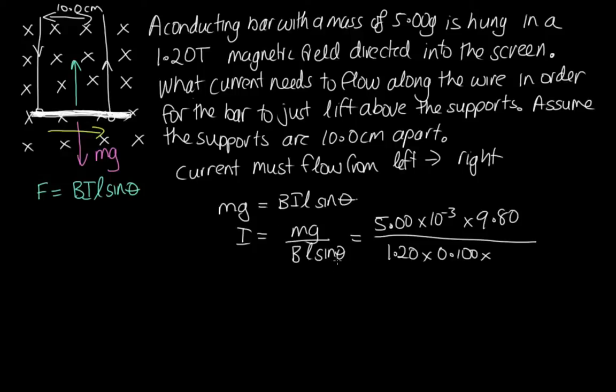And then sine theta, that's the angle between the magnetic field, which is into the screen, and the current, which is from left to right. So that is 90 degrees. They're perpendicular to each other. And so solving this on the calculator, we get 0.408 amps.